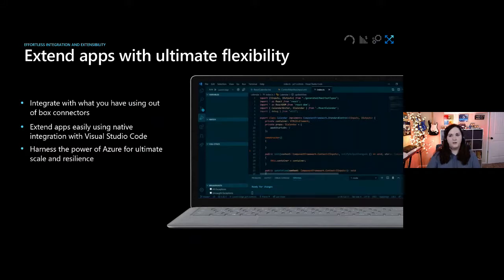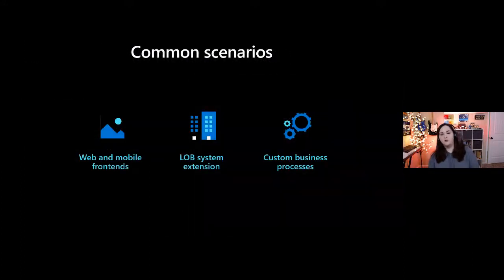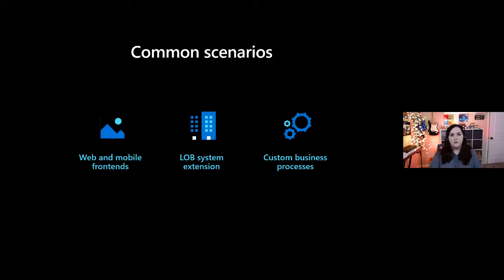We can also extend apps with great flexibility. There are easy integrations and add-ons for VS Code where we can build and develop things for the Power Platform. Of course, if you harness the power of Azure on top of all this, you can add even more power to your Power Platform applications. Common scenarios include a web and mobile front-end, extending a line-of-business app, or custom business process scenarios — all great use cases for the Power Platform.